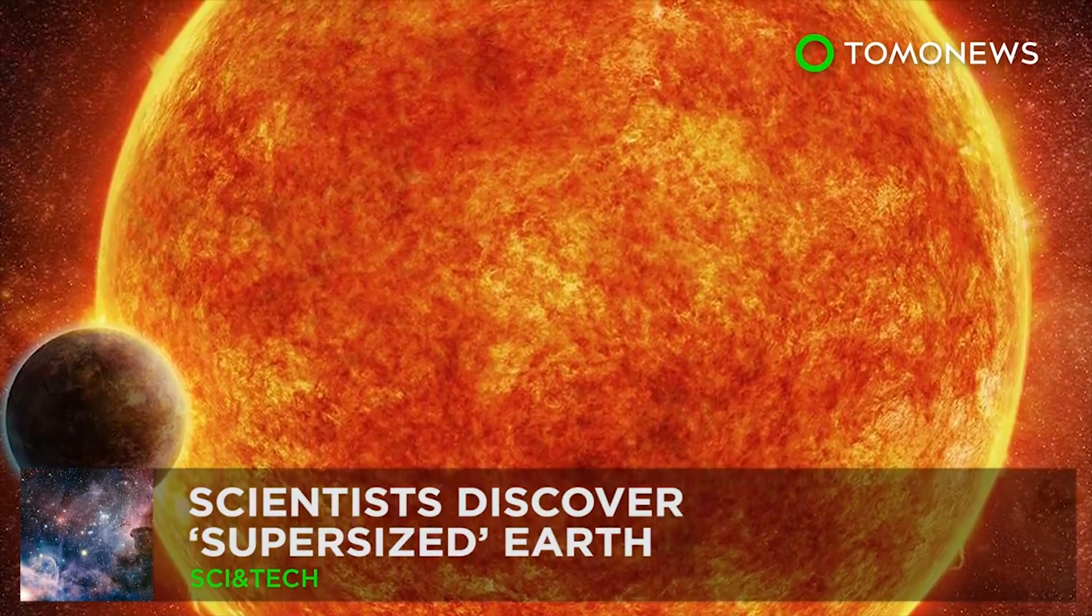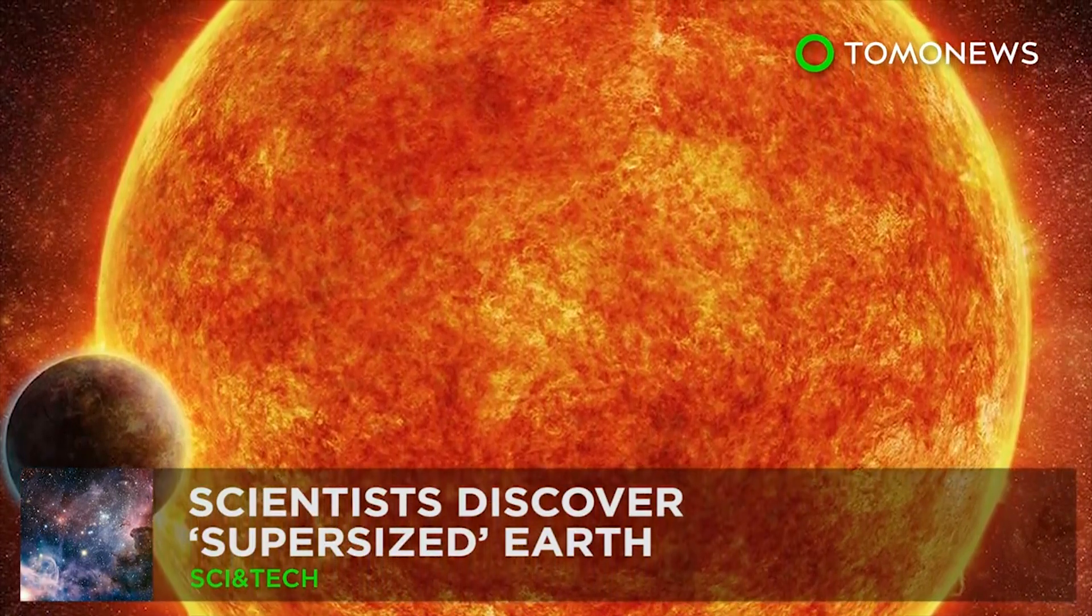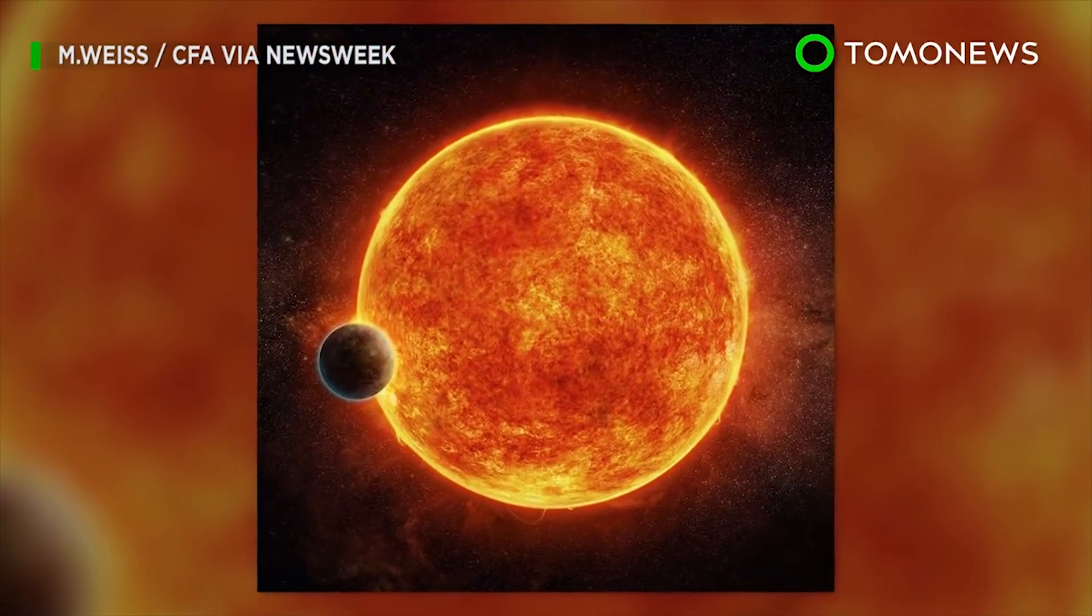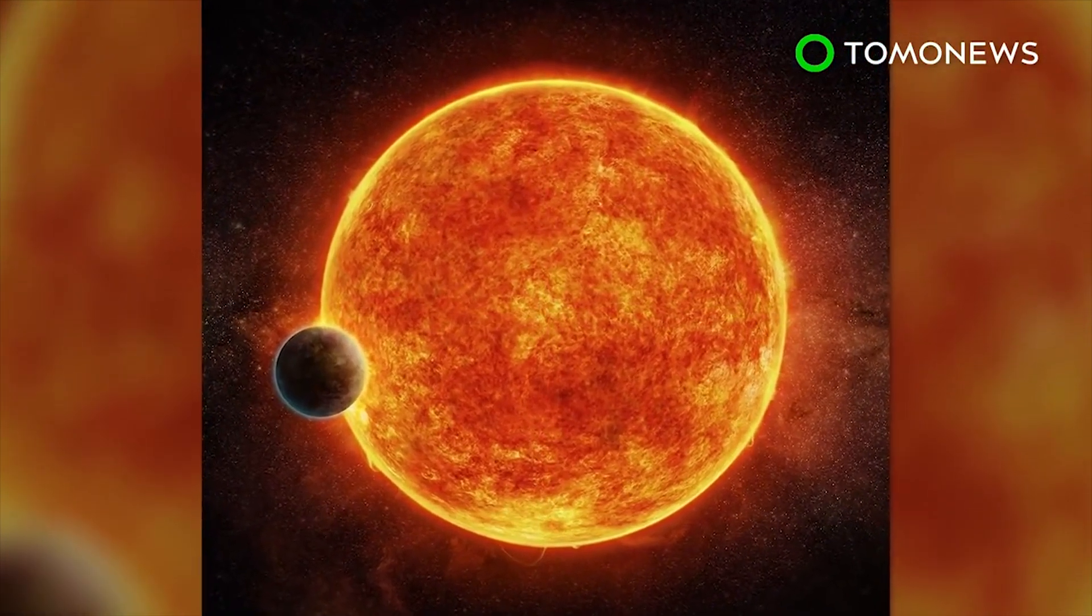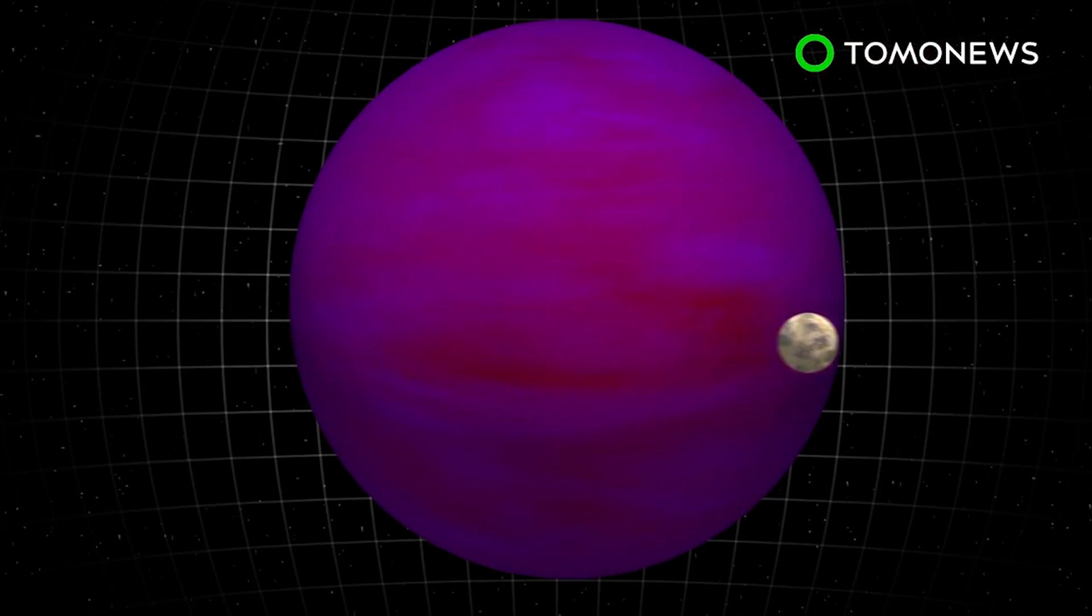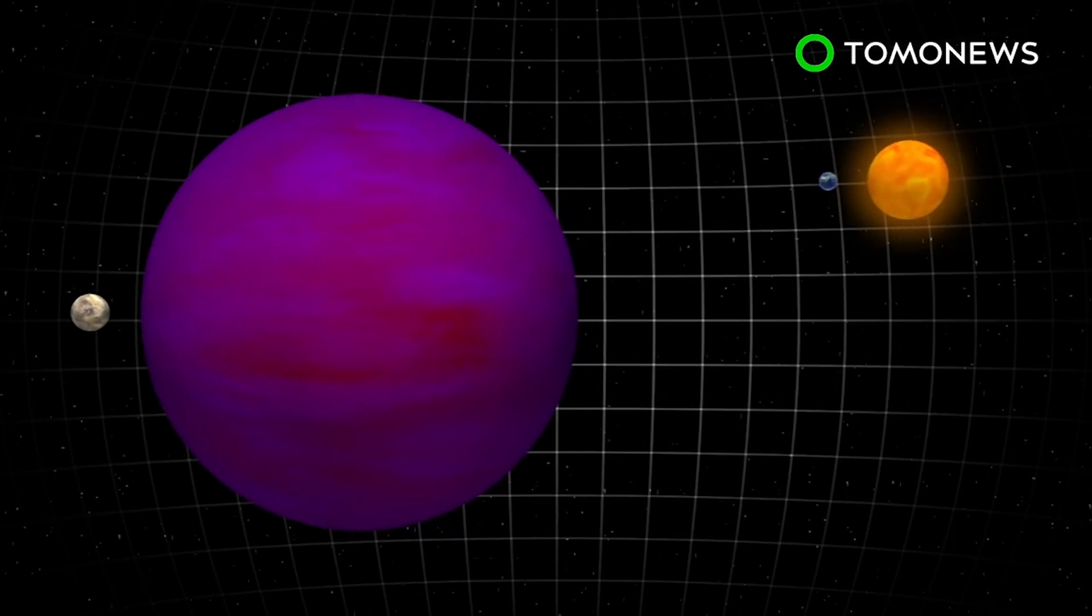This jumbo-sized planet Earth may support alien life. American scientists have discovered a super-sized Earth-like planet in a nearby star system that could support alien life. Exoplanet LHS-1140b orbits a red dwarf star every 25 days at a proximity 10 times closer than Earth to the Sun.